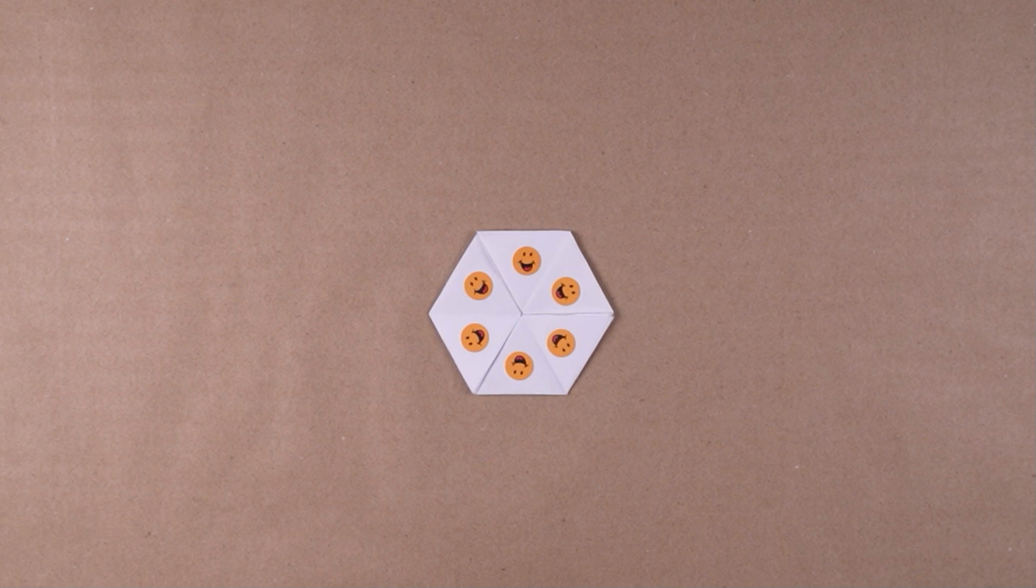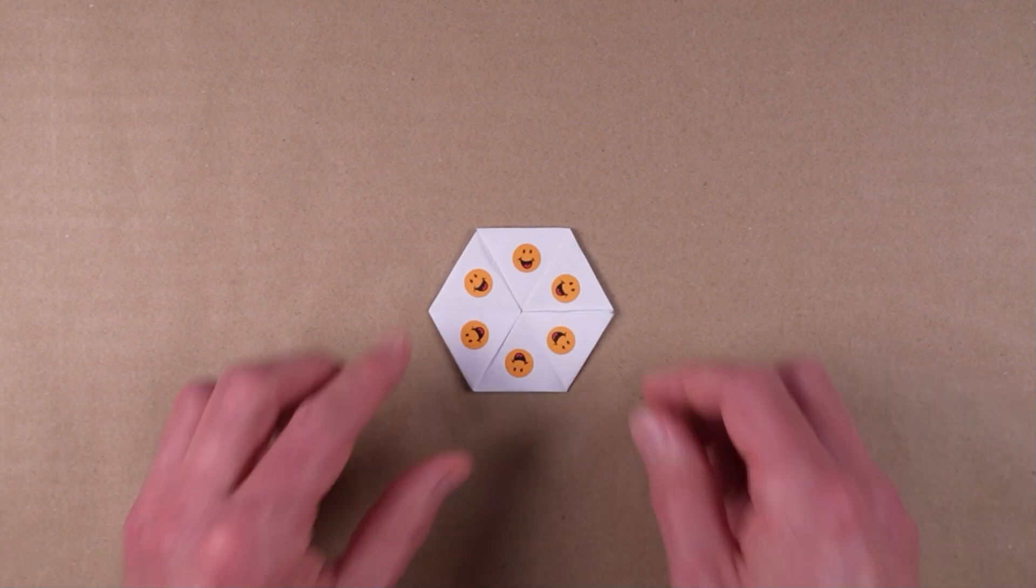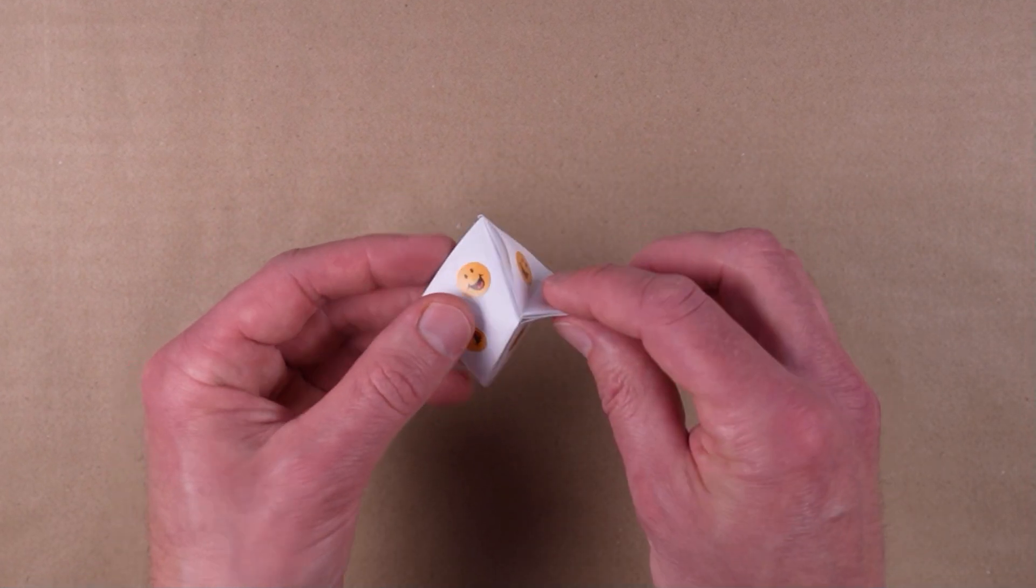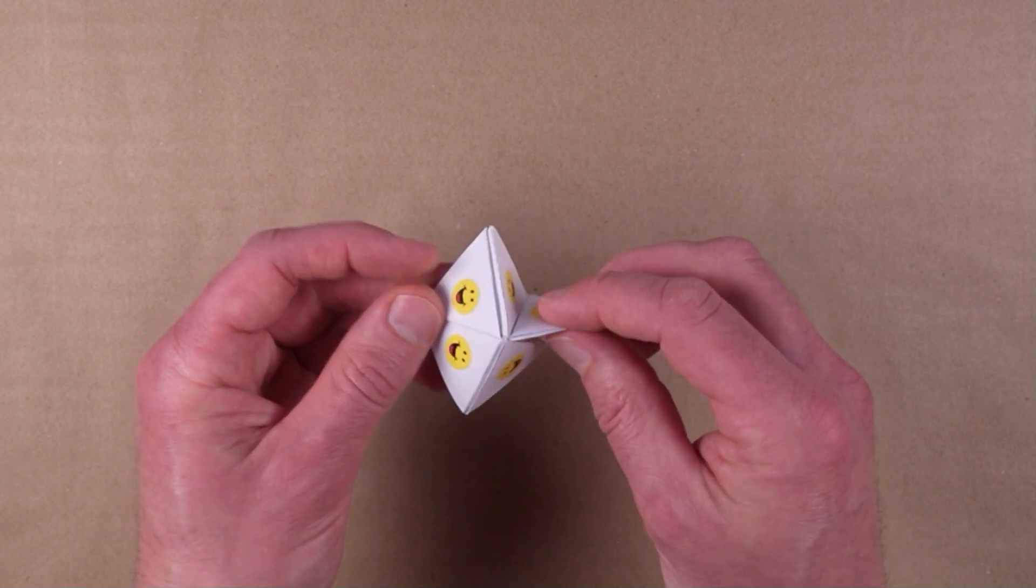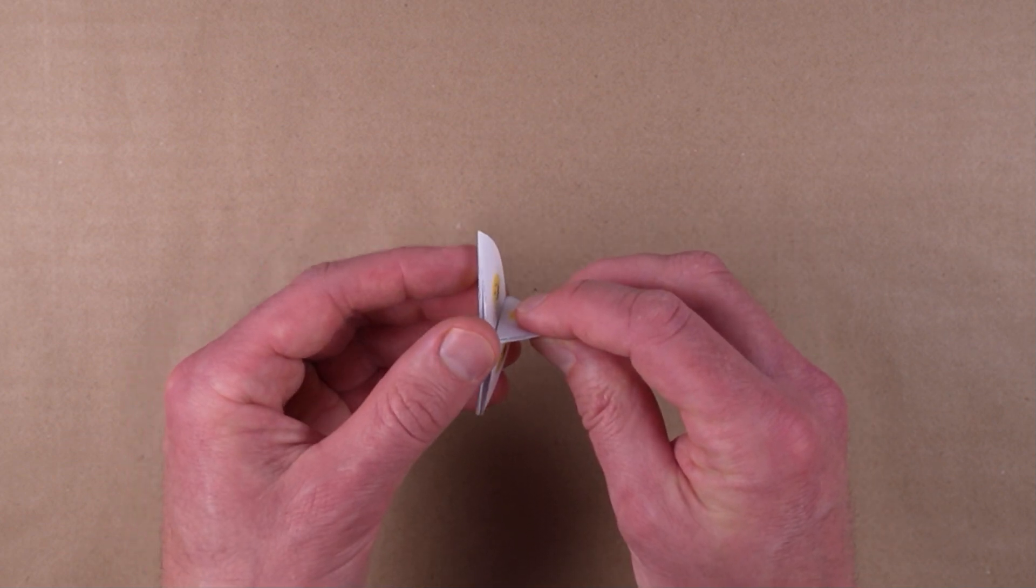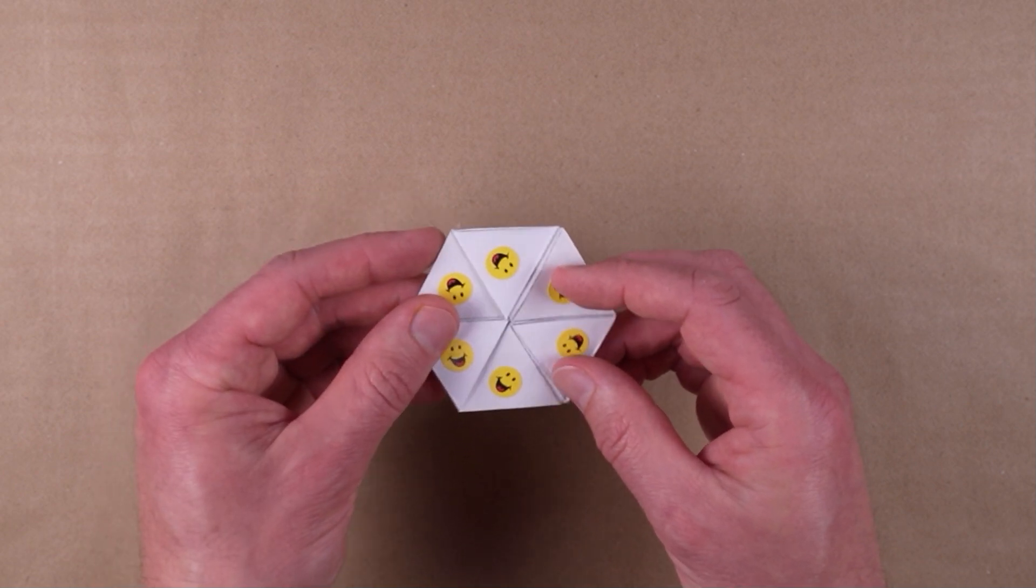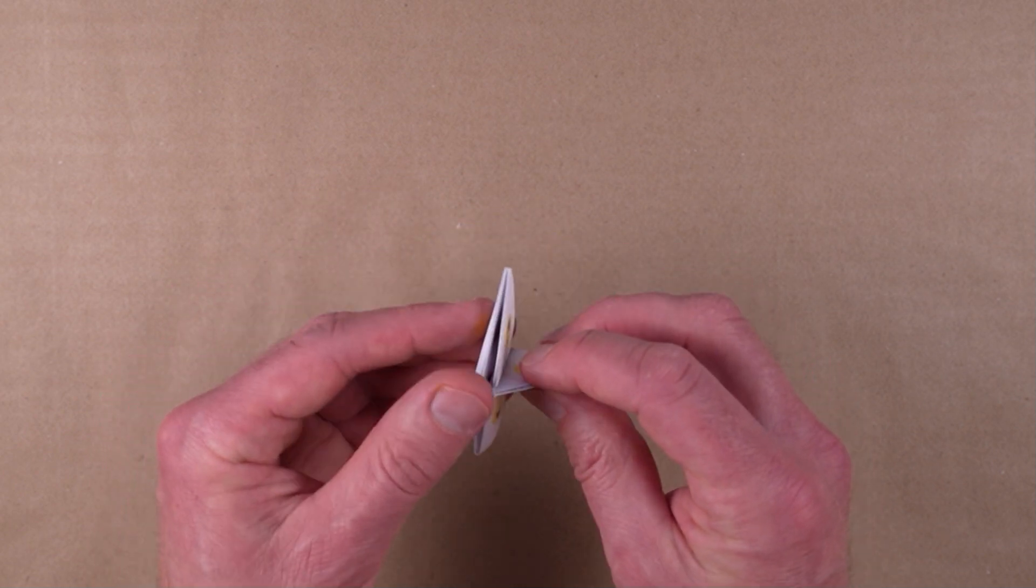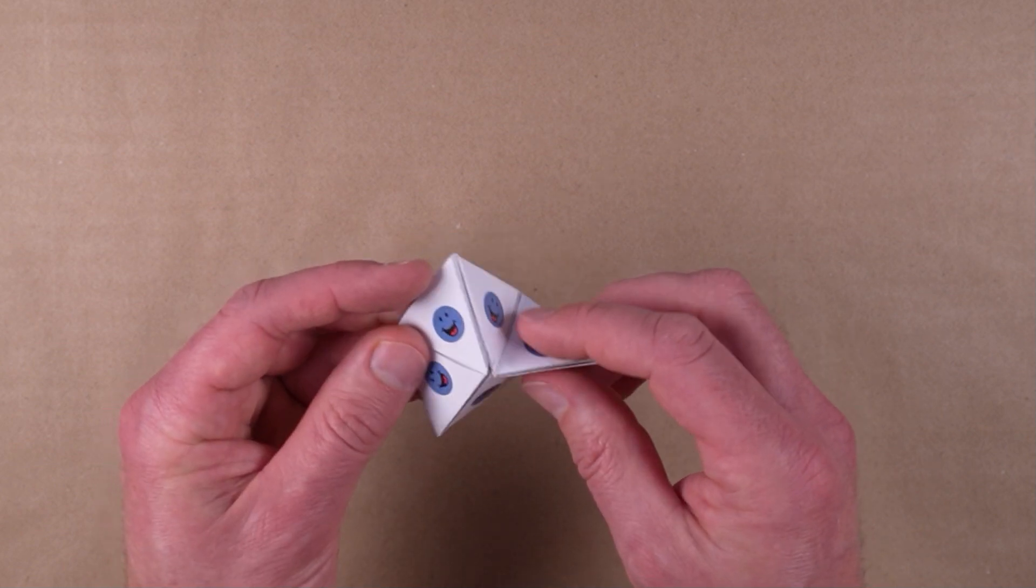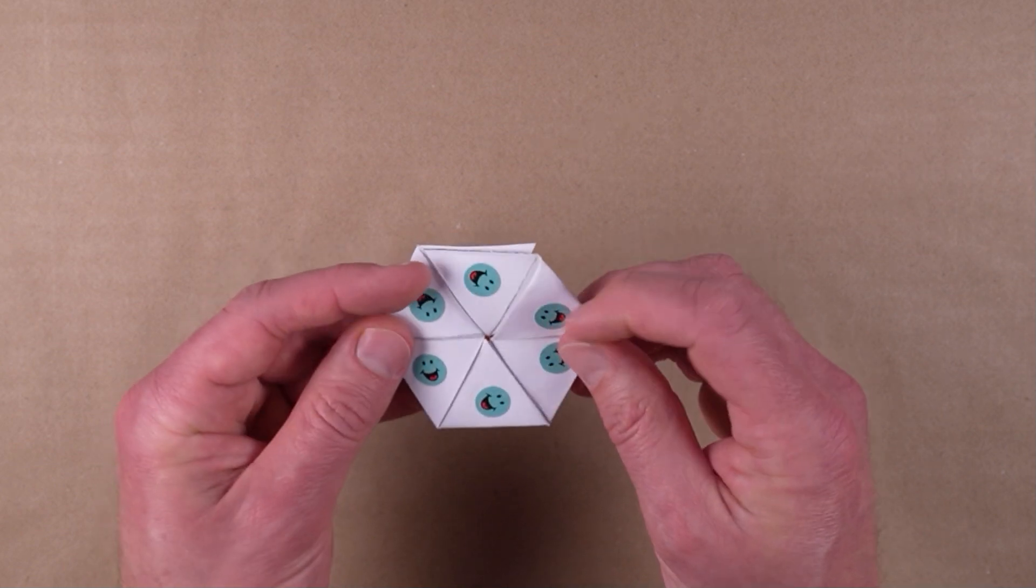If you're having difficulty bringing out some of the hidden faces, try this. Pick a pair of triangles and repeatedly perform the flex algorithm starting with those triangles until you can no longer complete the step where you pull apart the opening at the top. From there, rotate the hexagon and do the same starting with an adjacent pair of triangles. Continuing this process will eventually reveal all six faces.